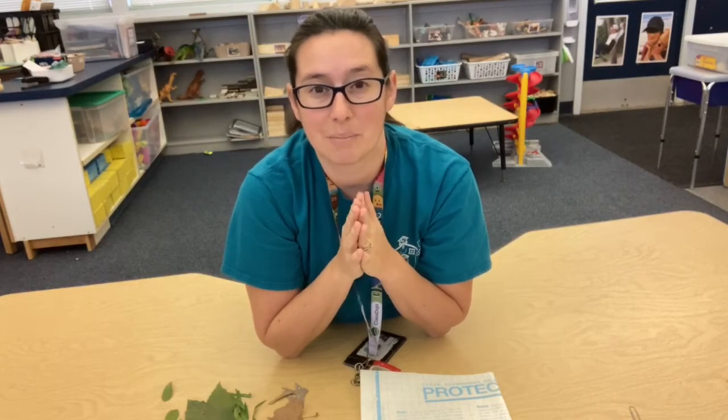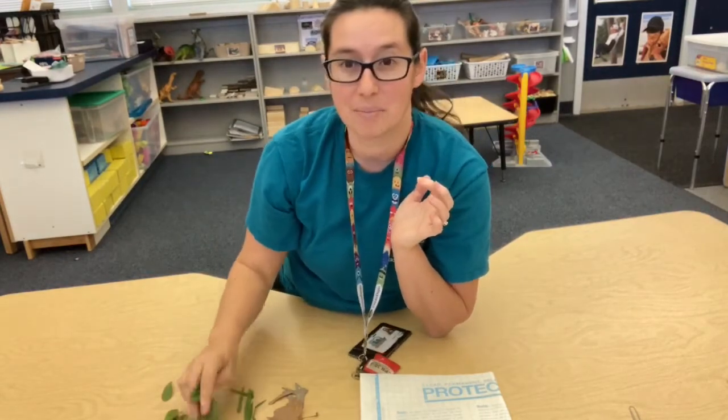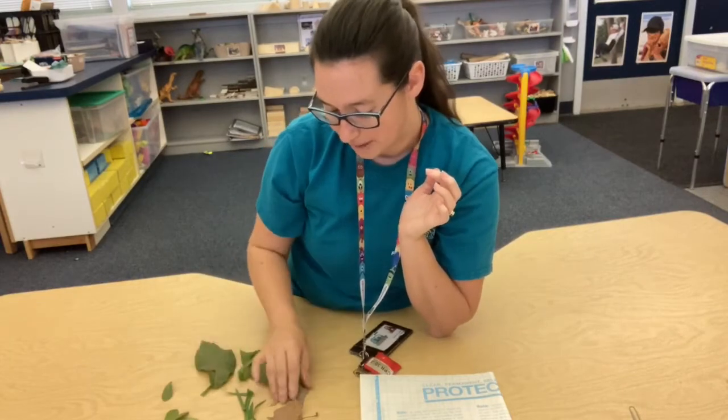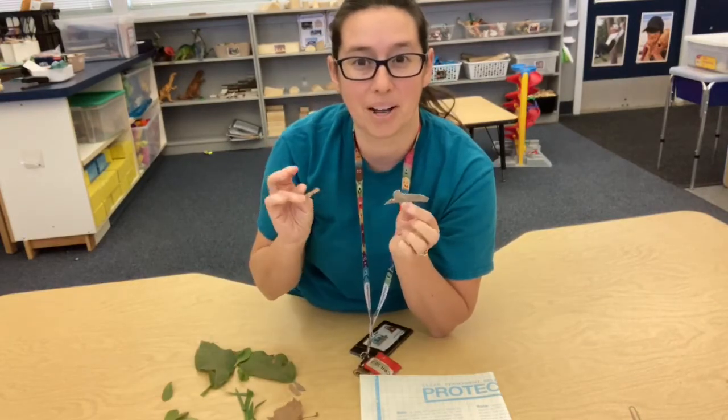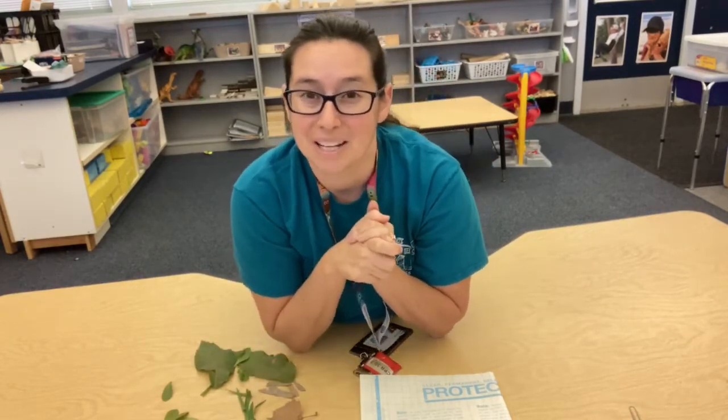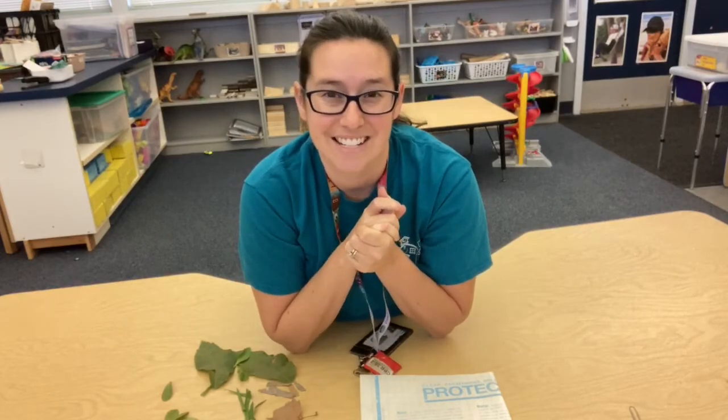You might pick out some leaves, some bark or grass blades, maybe some flowers if you have some in your yard. I picked out a bunch of different green leaves. I also had some bits of bark on mine as well, and so we're going to get going and make our sun catcher.